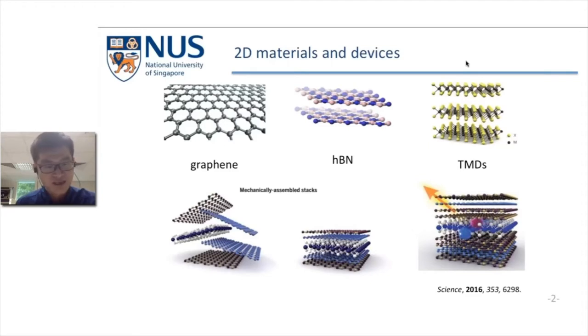The second point is that these 2D materials with different properties can be stacked together to form van der Waals heterostructures, just like quantum wells in traditional semiconductors. However, for the 2D case, there are no dangling bonds between different layers, so there is no limitation from lattice mismatch.